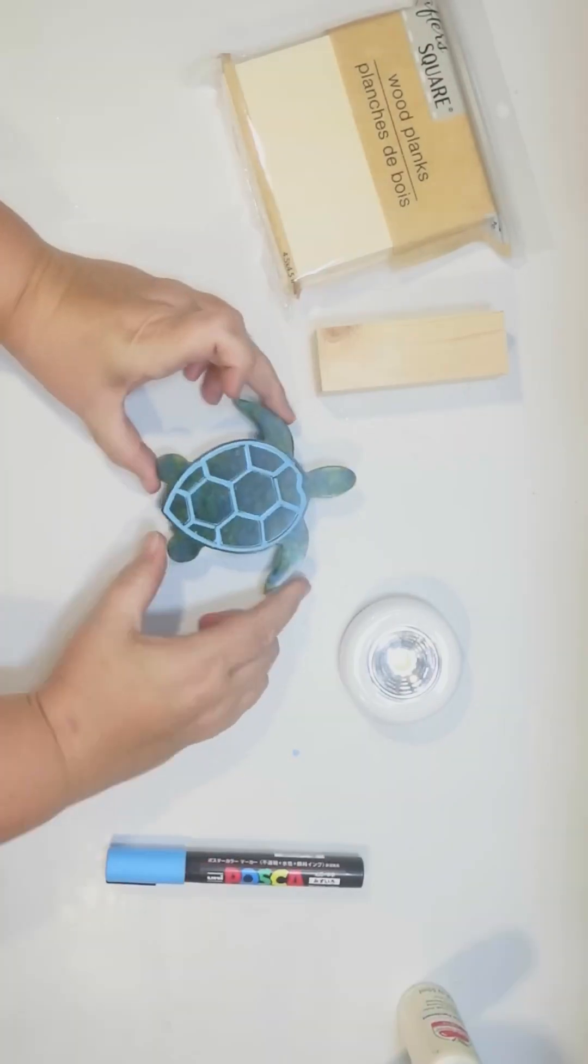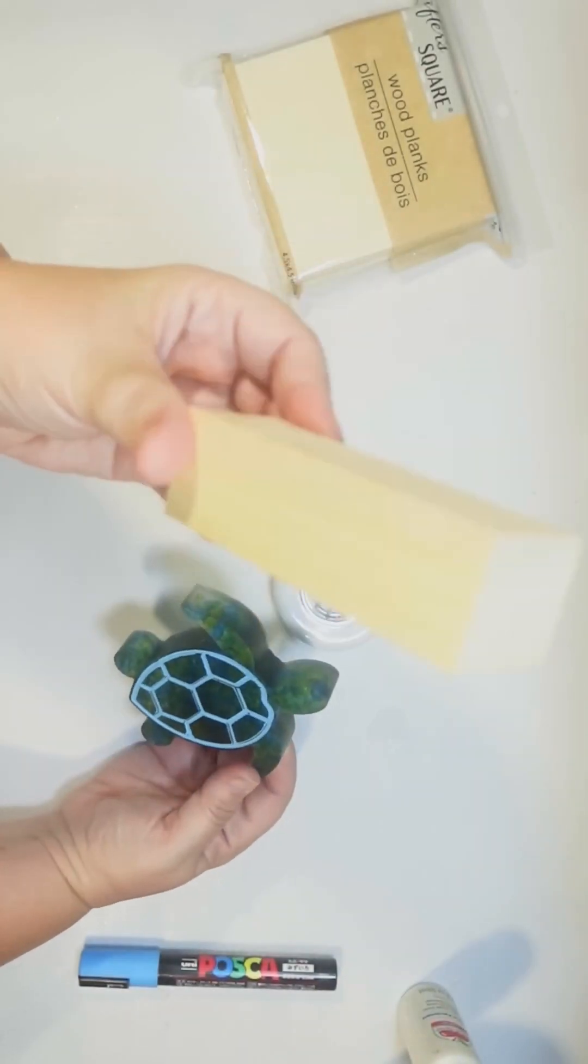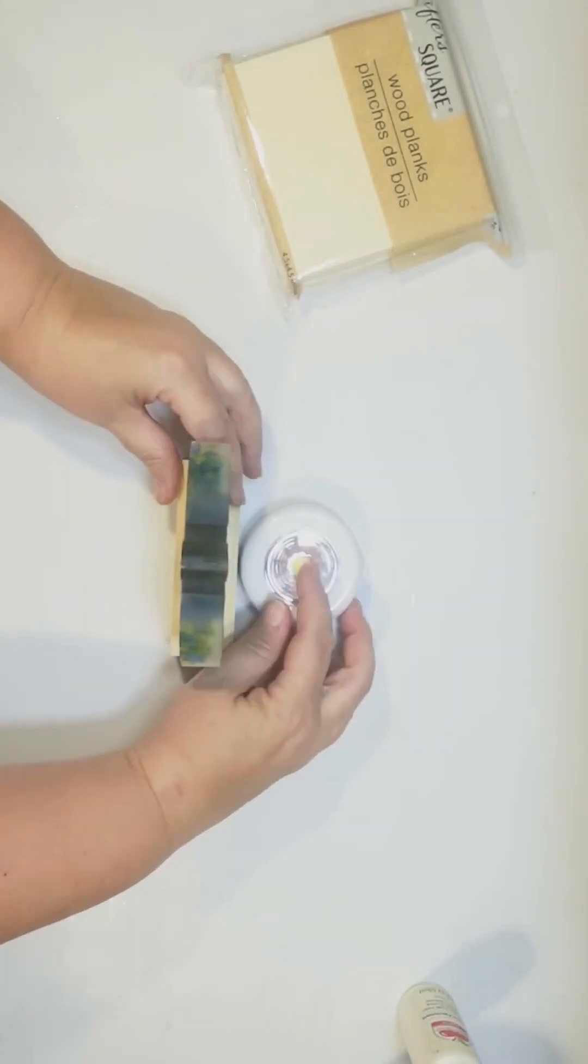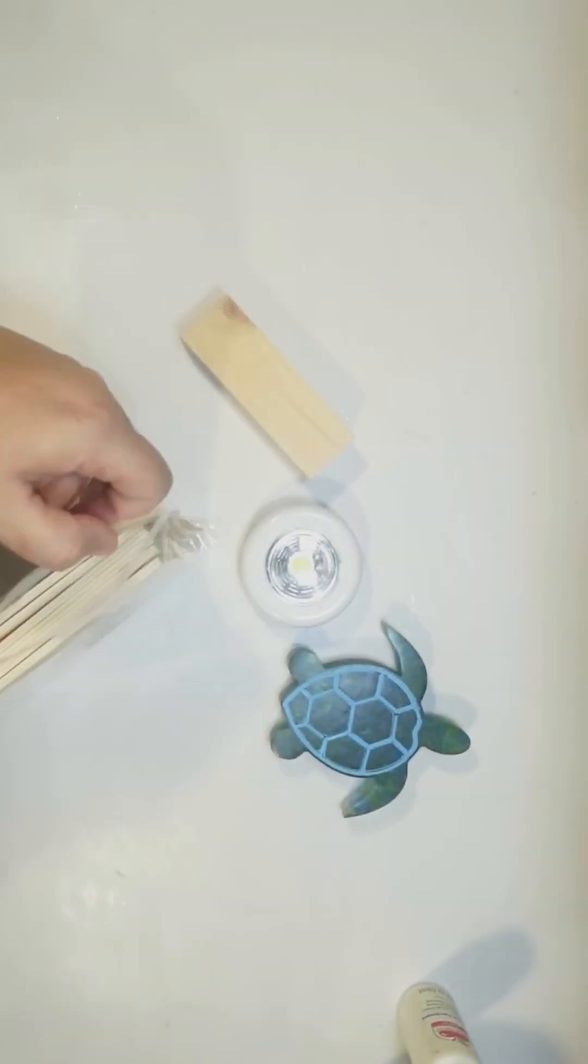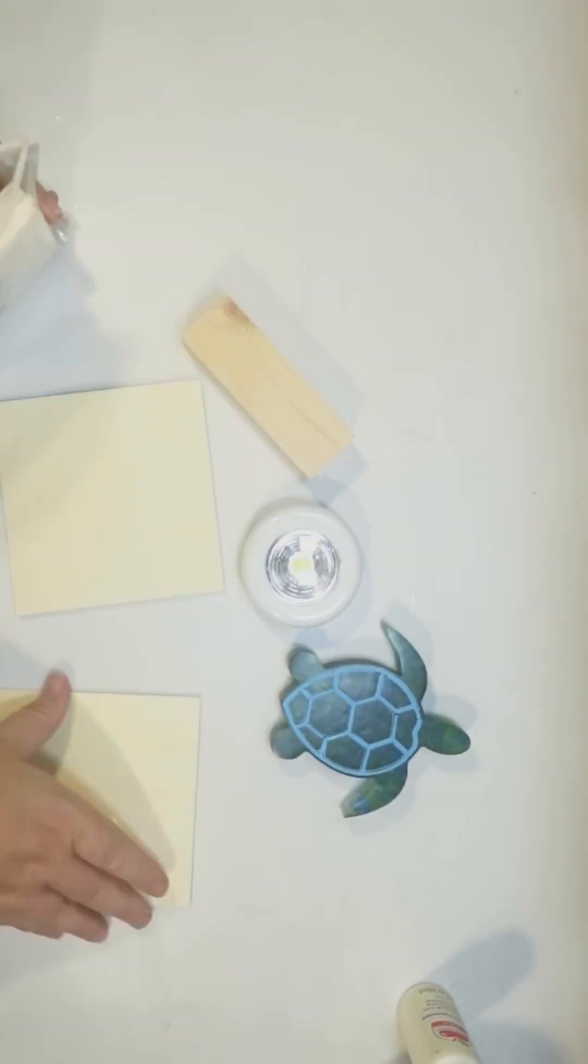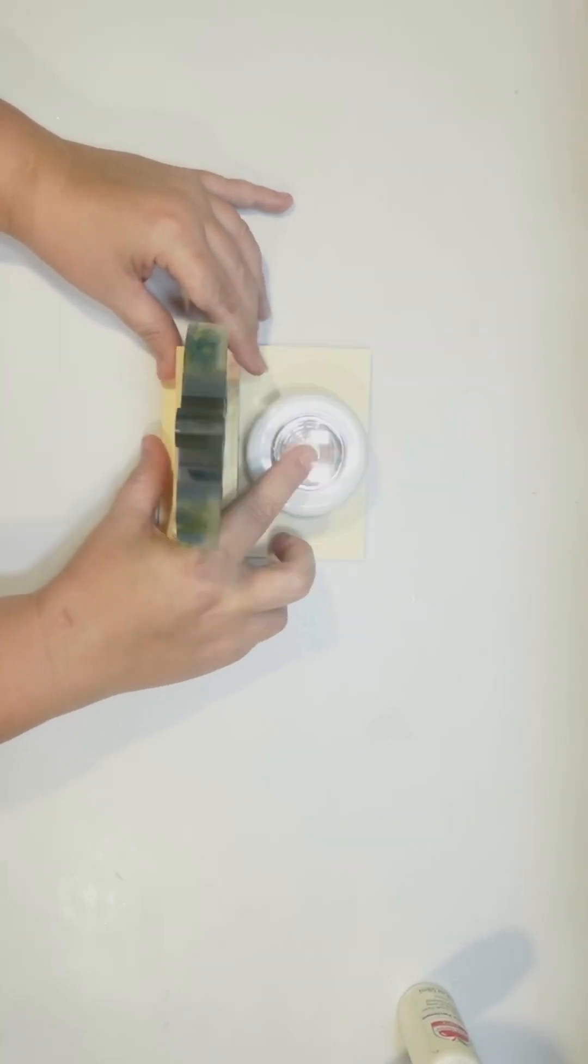For the light, I'm using one of the little LED push lights from the Dollar Tree, and I'm going to try to make a little stand that we can use for the sea turtle. So I'm just using one of the square wood pieces from the Dollar Tree, along with - that's a Jenga block.